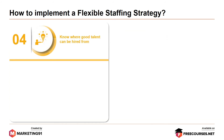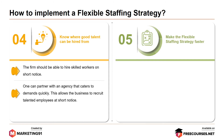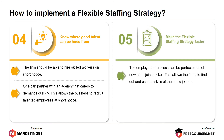Next, know where good talent can be hired from. The firm should be able to hire skilled workers on short notice, and can partner with an agency that caters to demands quickly, allowing the business to recruit talented employees at short notice. Finally, make the Flexible Staffing Strategy faster — the employment process can be perfected to let new hires join quicker, allowing the firm to find and utilize the skills of their new joiners sooner.